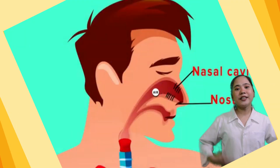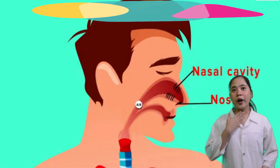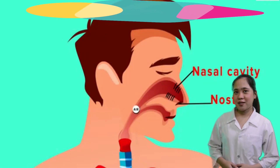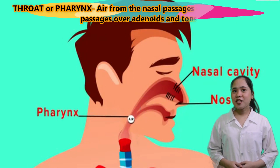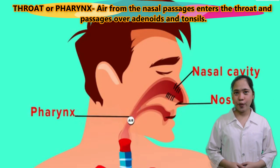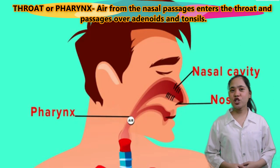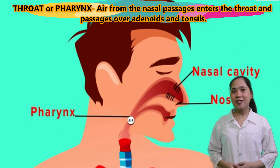The next part is the throat, or pharynx. Air from the nasal passages enters the throat and passes over adenoids and tonsils.